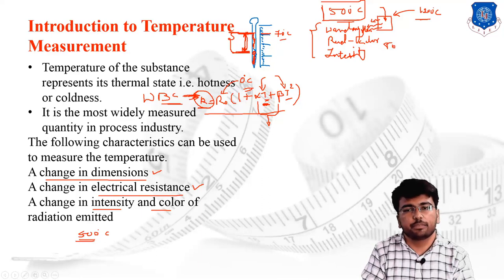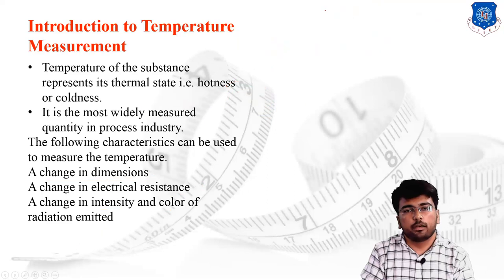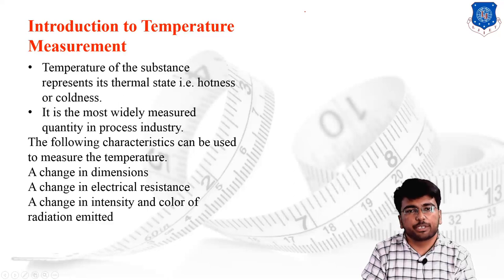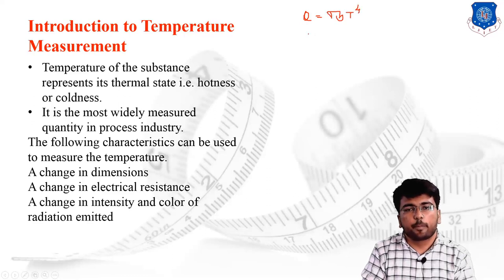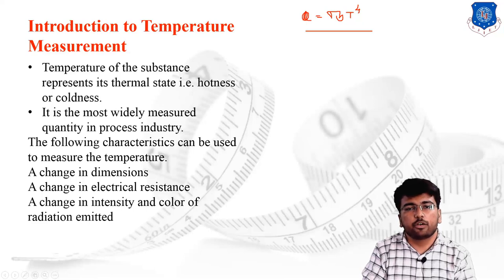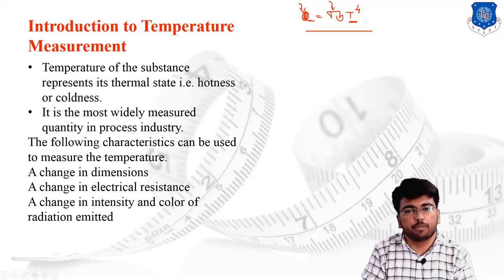One equation useful for measuring temperature from radiation is the Stefan-Boltzmann law: Q = σ_b × T⁴. The heat Q coming out from the radiating body is directly proportional to temperature to the power 4. If I know the value of Q and sigma_b (the Stefan-Boltzmann constant), I can find the value of temperature T.